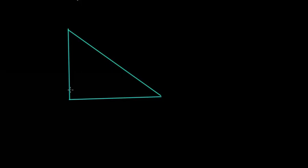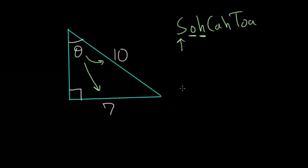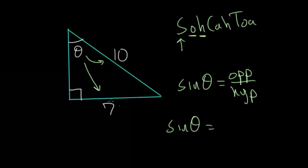Let's look at another example problem. Say you have some other right triangle where one side length is 7 and the hypotenuse is 10, and we want to know what this angle theta is equal to. Again, I'll set up SOHCAHTOA to figure out which trig ratio to use. Relative to our angle, we have the side that's opposite it and we also have the hypotenuse. When dealing with the opposite and the hypotenuse together, we want to use the sine function. So we set up that the sine of theta equals the opposite divided by the hypotenuse — that's 7 divided by 10.